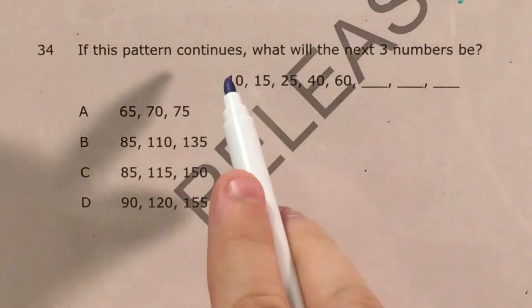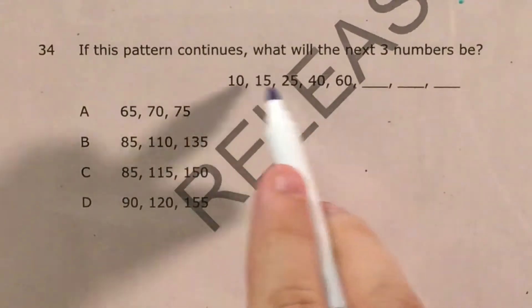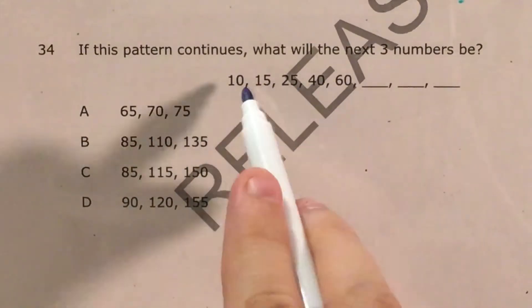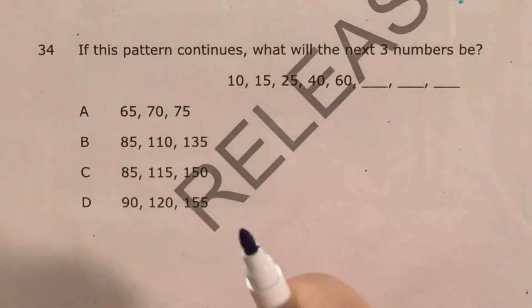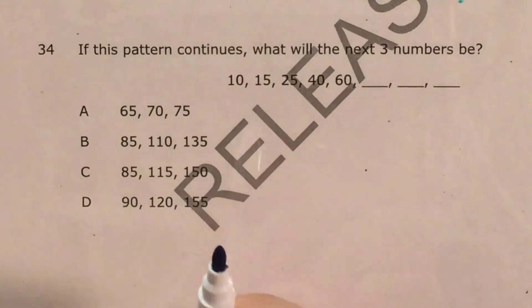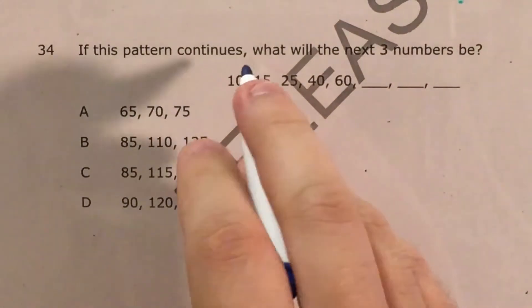So I want to start by just thinking about what am I adding every time to get from one number to the next number here. That's usually the easiest place to start and it's not until you get to middle and high school that they throw in multiplying or dividing. So for now I'm just going to think about what I'm adding.